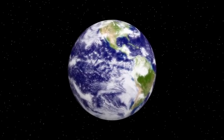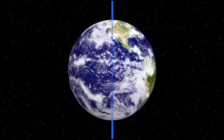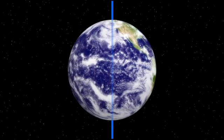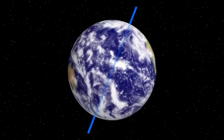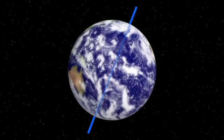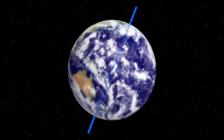The axis is an imaginary line that runs from the North Pole through the center of the Earth to the South Pole. The Earth rotates, or spins, about this axis. This axis is tilted at about a 23.5 degree angle.